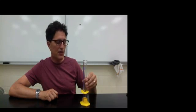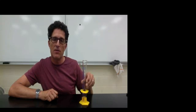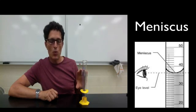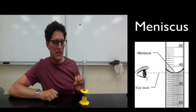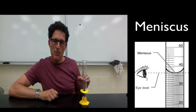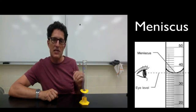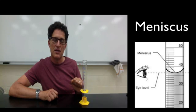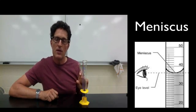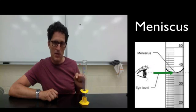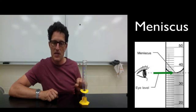The third thing is that you have to read from something called the bottom of the meniscus. Now, when a solution or water is placed into a graduated cylinder, the properties of the water or the solution tend to make it want to climb up the sides of the graduated cylinder. You want to avoid reading the top of the meniscus and read from the bottom of the meniscus where the true volume is.